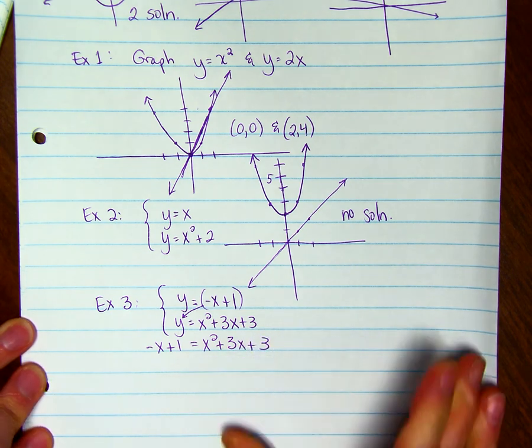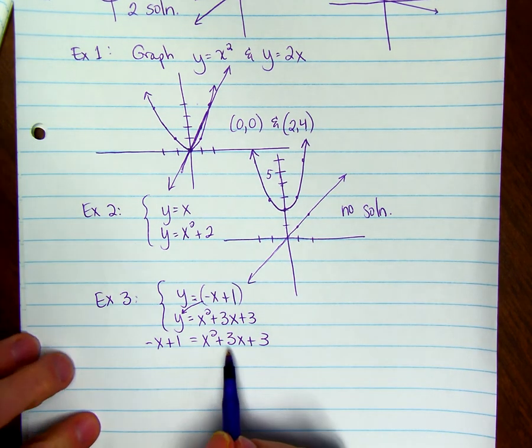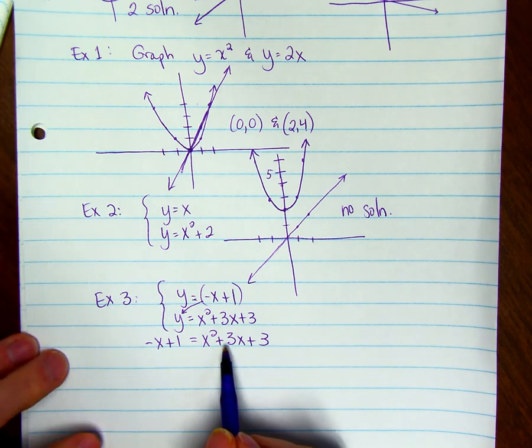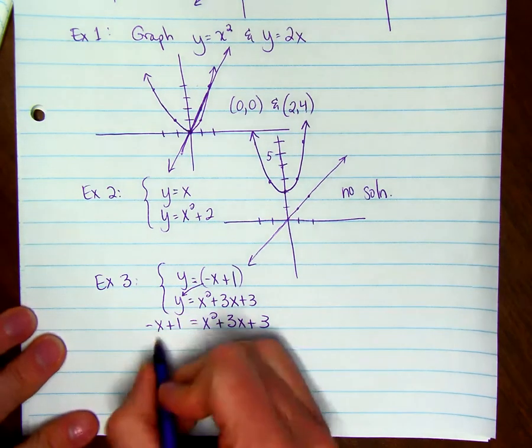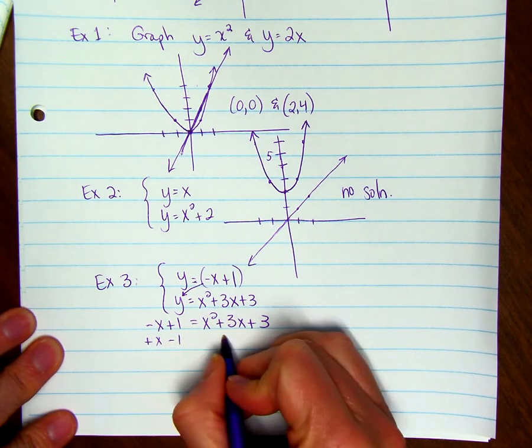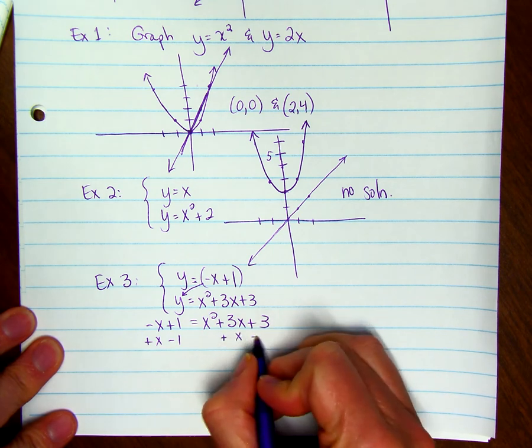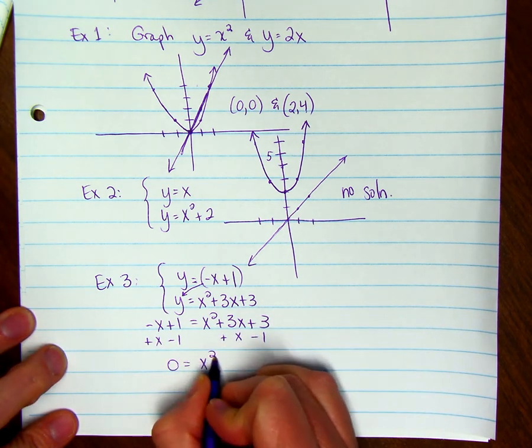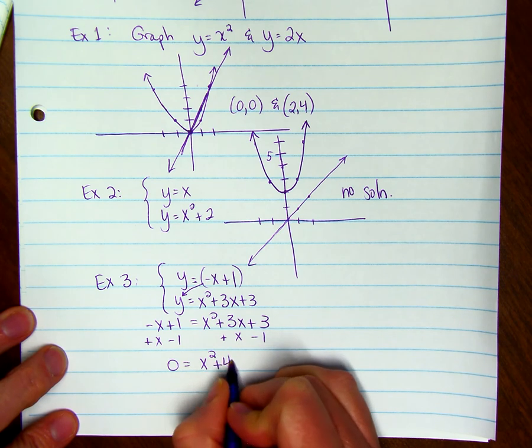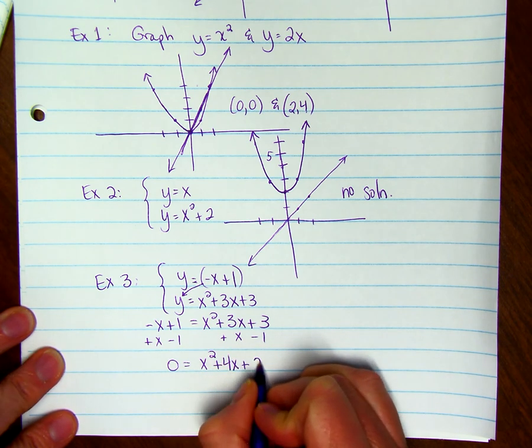So what I do is I want to set equal to 0. So I want to get 0 on this side. So I'm going to add x and subtract 1. Add x, subtract 1. And I get 0 = x² + 4x + 2.